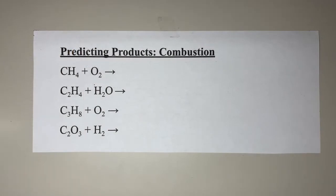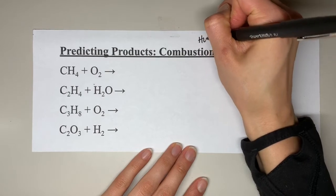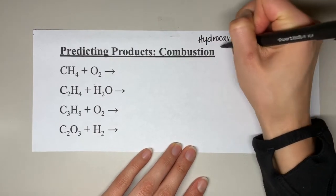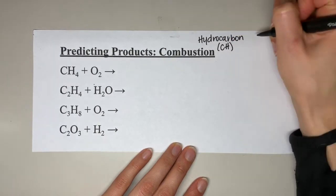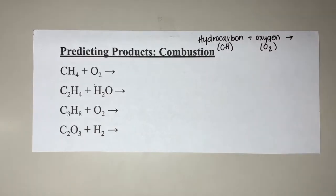Let's get started predicting products for combustion reactions. The first thing is getting used to recognizing combustion reactions just by looking at the reactants. There are four different reactions here, and we need to go through each one and determine whether it is combustion or not, because some equations can look like combustion at a glance but actually aren't. Remember: a combustion reaction has a hydrocarbon — some carbon-and-hydrogen molecule — reacting with oxygen gas, O2.